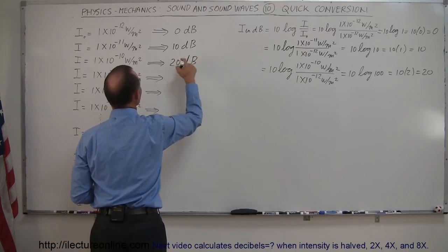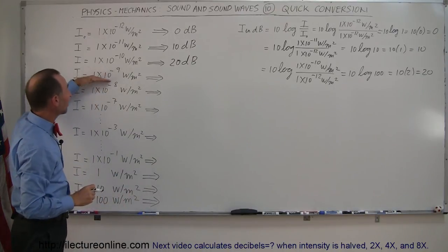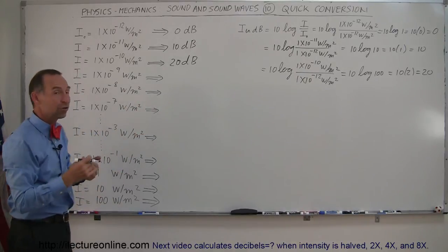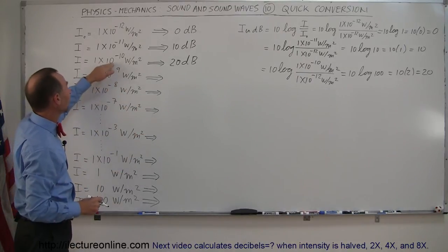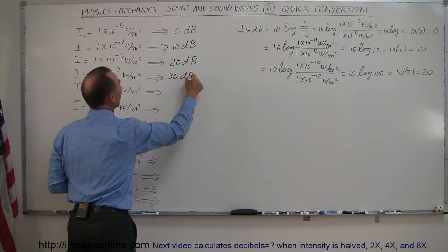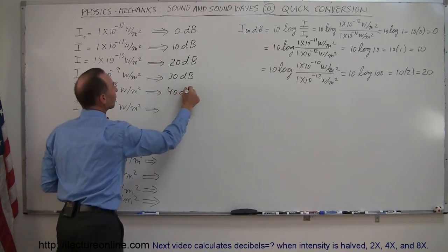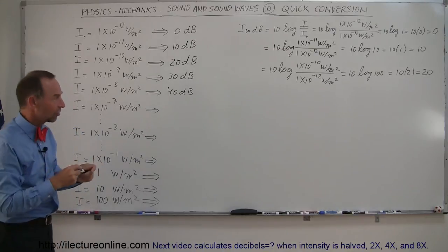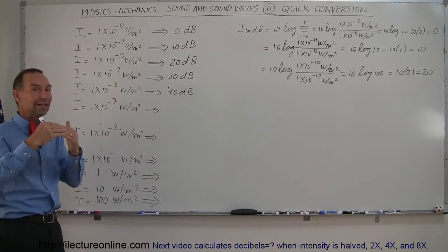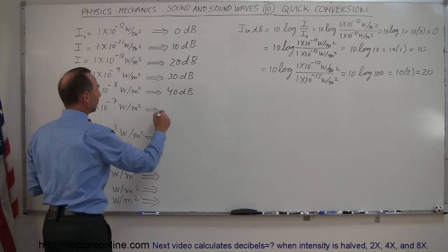Now you should start seeing the pattern. Each time the intensity of sound is 10 times as loud as the previous, the intensity on the decibel scale goes up by 10. So 10⁻⁹ is 10 times bigger than 10⁻¹⁰, giving 30 decibels. And 10⁻⁸ is 10 times bigger still, giving 40 decibels. And so forth — every time you hear a sound 10 times louder than the one before, the decibel value goes up by 10.